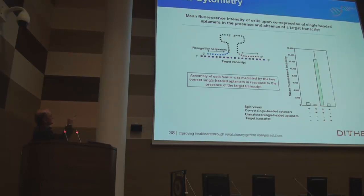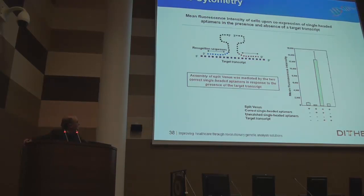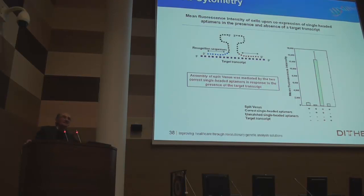Here are fluorescent cells being monitored by flow cytometry. The bottom line is: if you don't have the target, if you don't have the right aptamers, if anything is left out of the system, you get no signal. This absolutely requires that all the pieces come together.